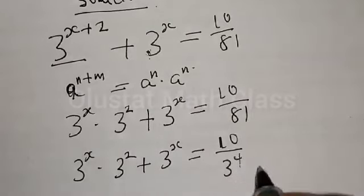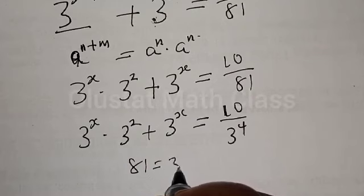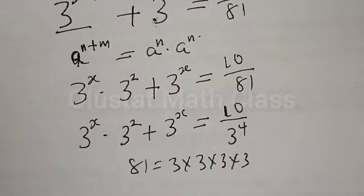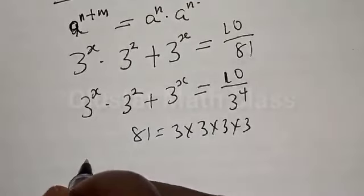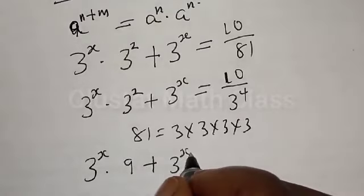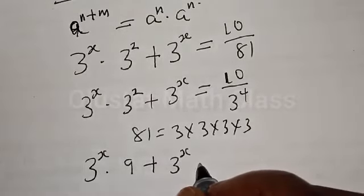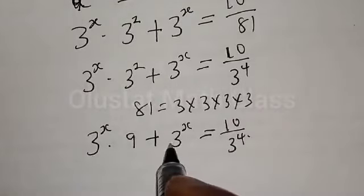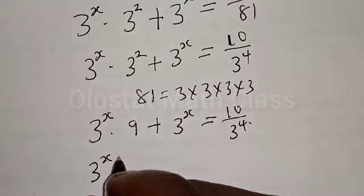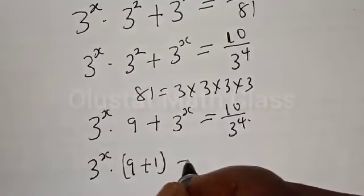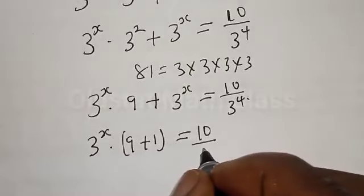We know that 81 is equal to 3 raised to the power 4, because 3 times 3 is 9, 9 times 3 is 27, and 27 times 3 is 81. Therefore our equation becomes: 3 to the power x multiplied by 9, plus 3 to the power x, equals 10 divided by 3 to the power 4. Then 3 to the power x is common, so we factor it out: 3 to the power x multiplied by (9 + 1) equals 10 divided by 3 to the power 4.